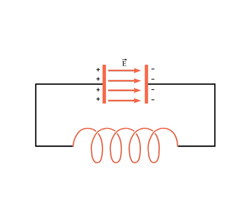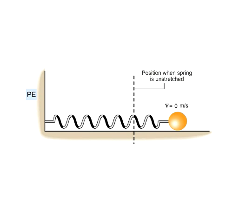In this animation, we will examine resonance in a circuit containing only a capacitor and an inductor, a so-called LC circuit. It may be helpful to recall that the term resonance is used to describe phenomena that occur at specific frequencies. One example of a resonant phenomenon is the horizontal spring-ball system on a frictionless surface, shown here.